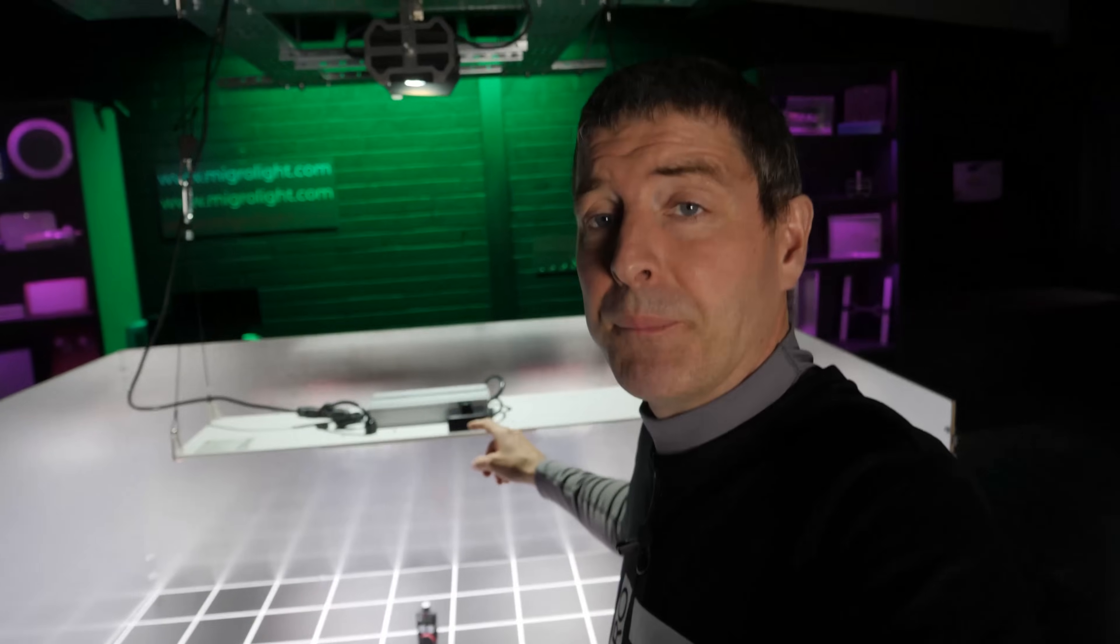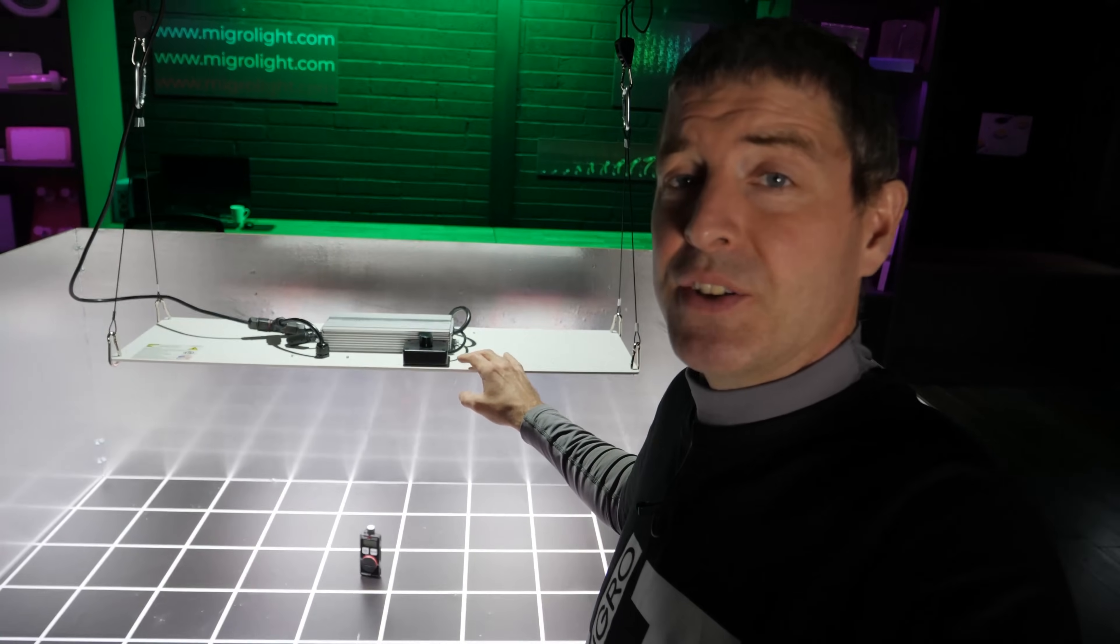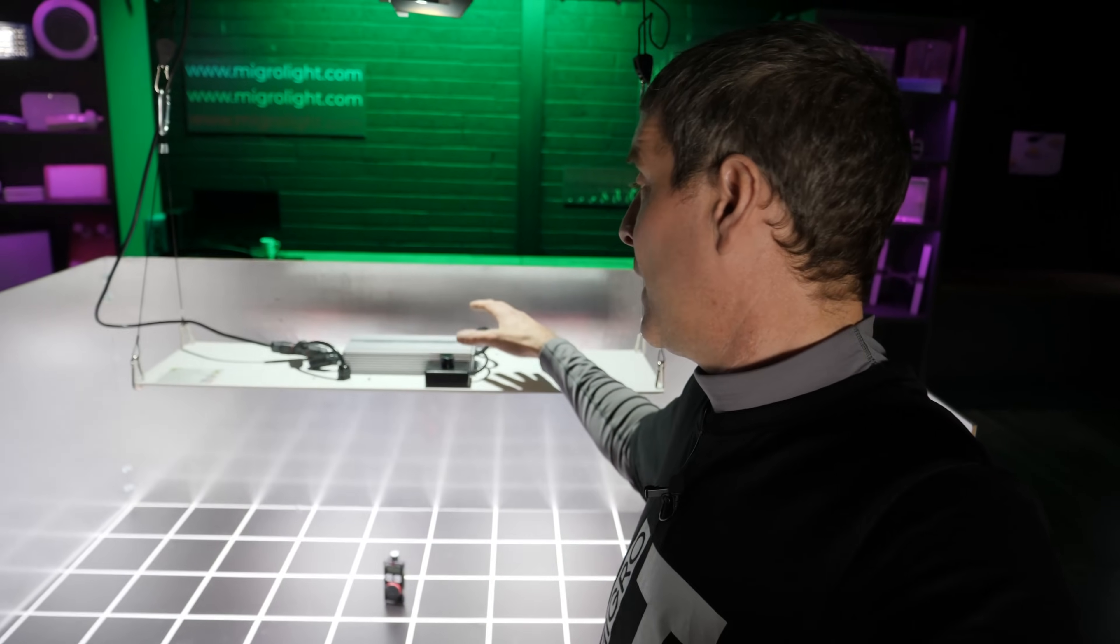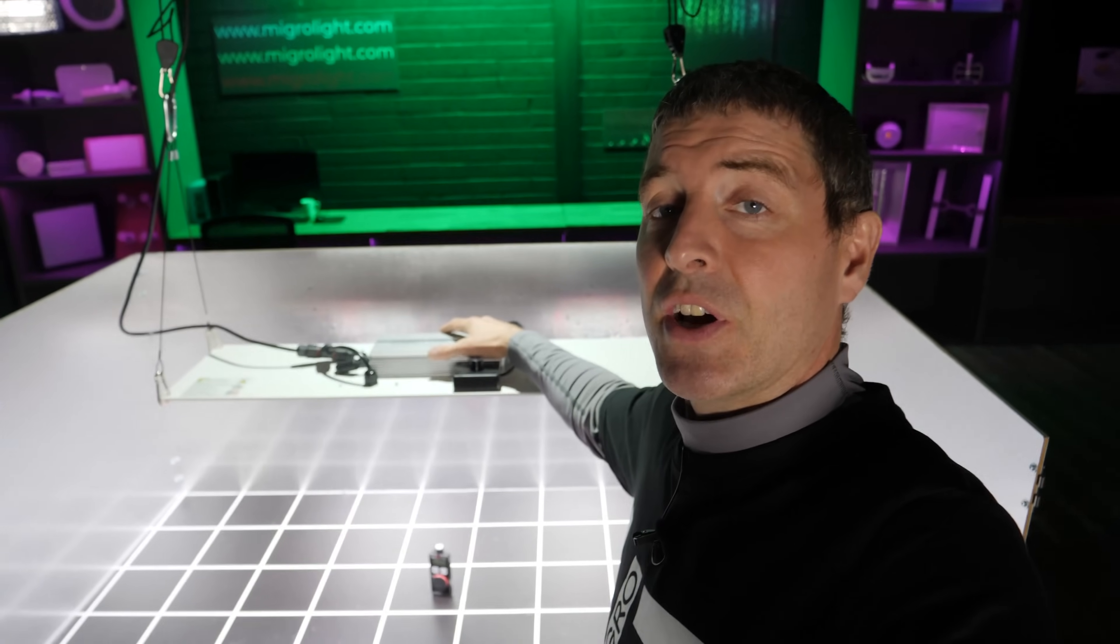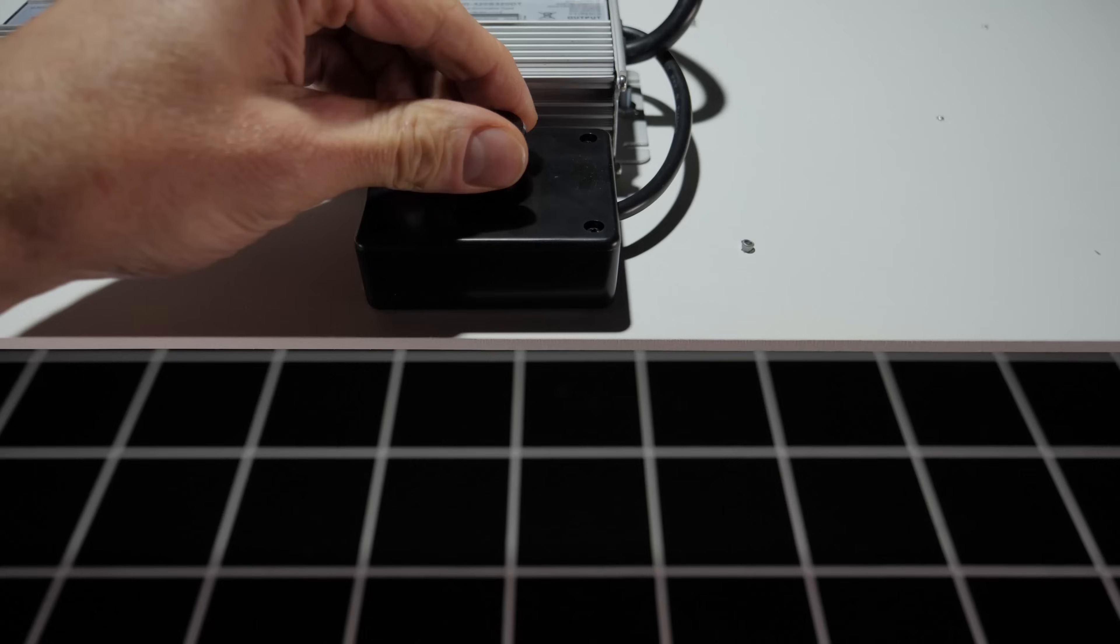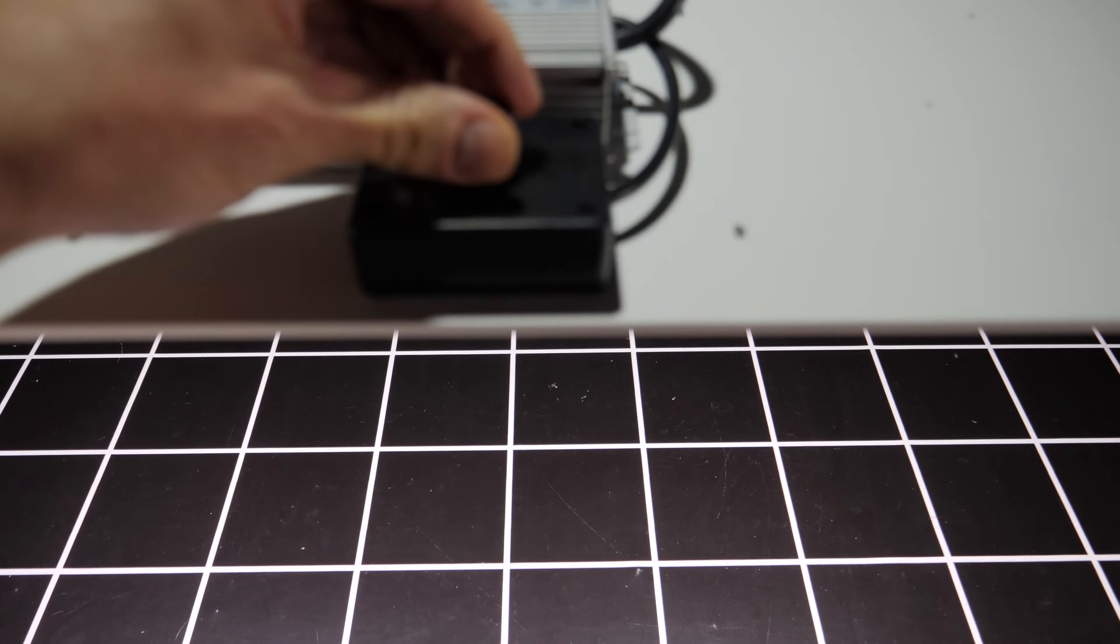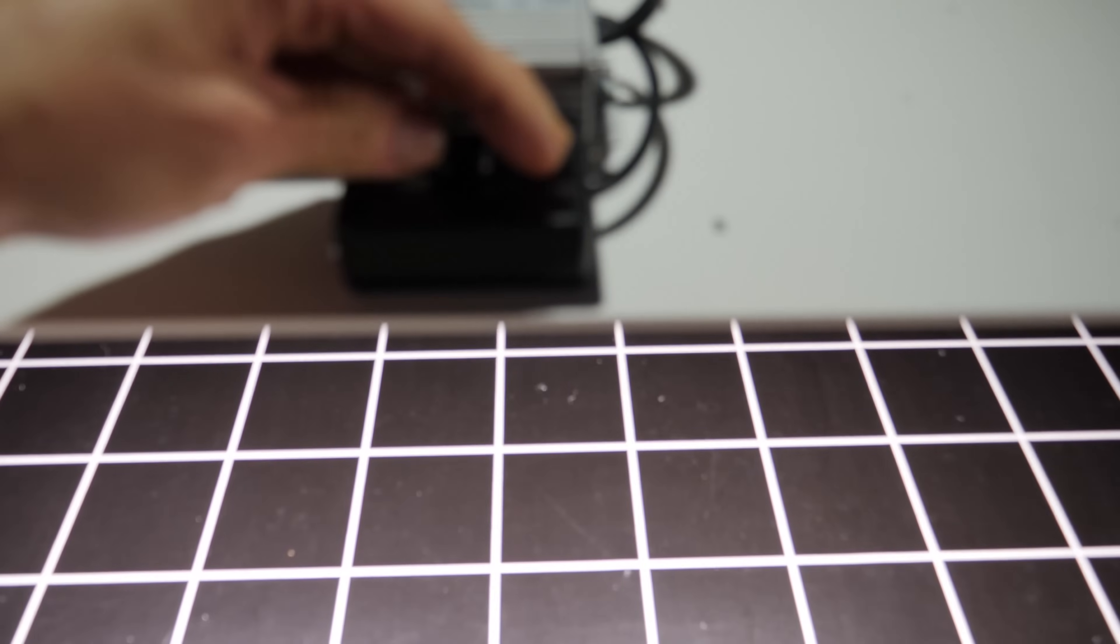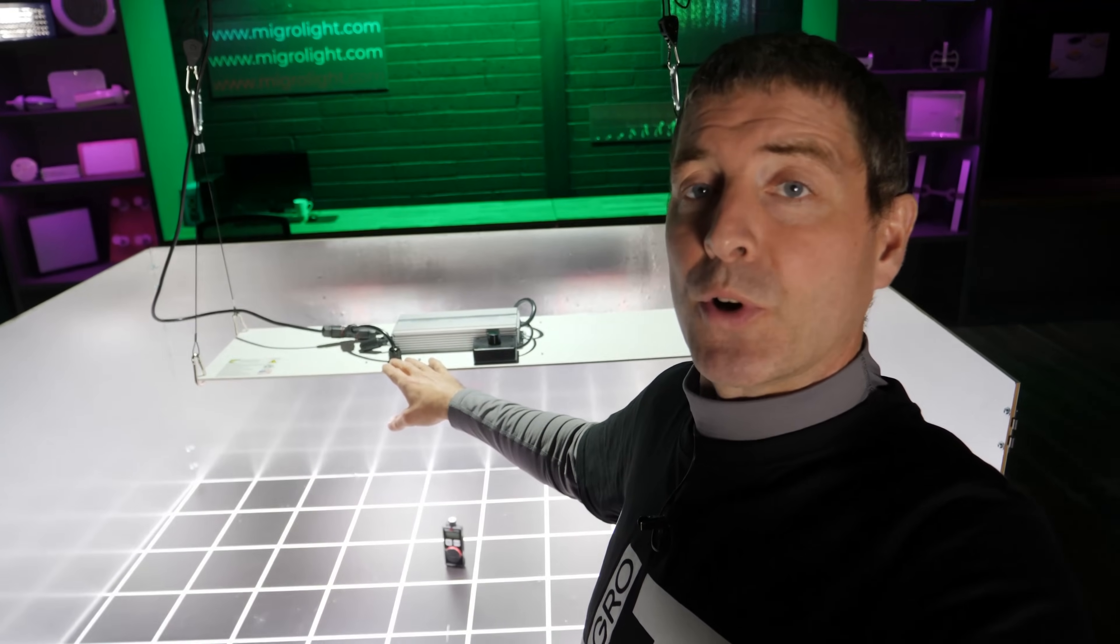First of all, let's have a look at the light. It's a pretty standard format now for HLG at this stage. They have an Inventronics driver on the back here with a dimming module, power cabling, and their aluminum backing board.